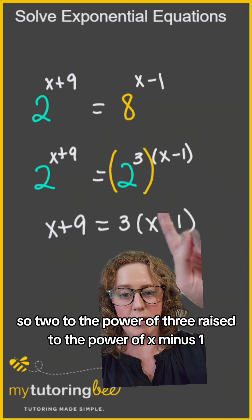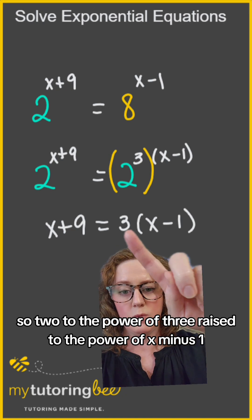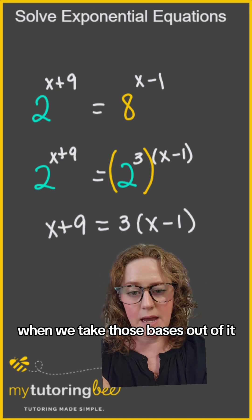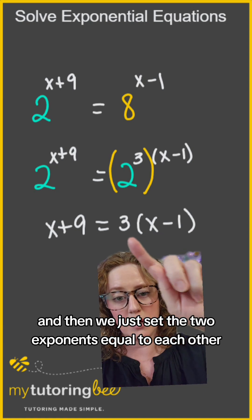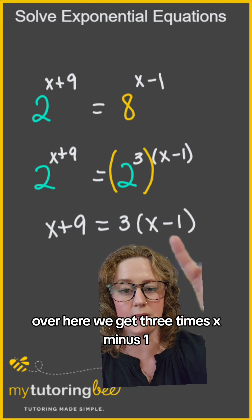So 2 to the power of 3 raised to the power of x minus 1. When we take those bases out of it and then we just set the two exponents equal to each other, over here we get 3 times x minus 1.